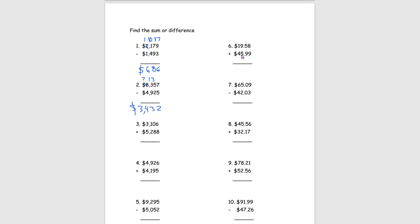For number 6 this time we are adding. So 8 plus 9 gives us 17, so we put a 7 and carry the 1. Then 5 plus 9 is 14, plus the carried 1 is 15, so we put a 5 and carry the 1. Then 1 plus 1 plus 4 gets us 6. So our answer for number 6 is $65.57. For our last problem, 9 minus 3 is 6, 0 minus 0 is 0, bring down the dot, 5 minus 2 is 3, and 6 minus 4 is 2. So our answer for number 7 is $23.06.